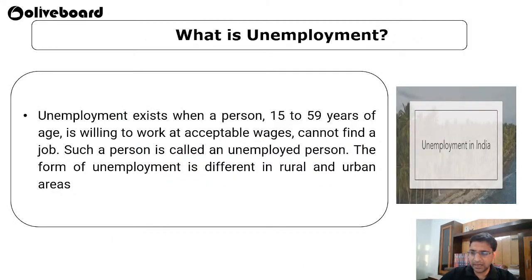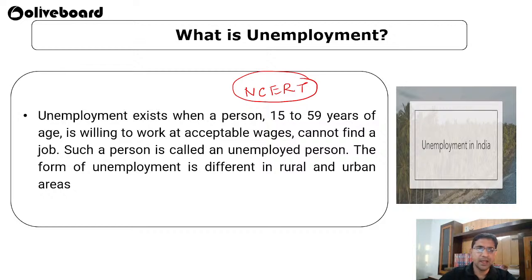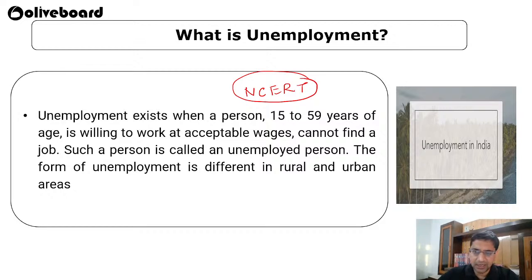So what is unemployment? Normally this is a definition from the NCERT books: unemployment exists when a person between the age of 15 to 59 years is willing to work at acceptable wages but cannot find a job — such a person is called an unemployed person. The forms of unemployment are different in rural and urban areas, so it depends on what type of unemployment is there in urban versus rural areas.